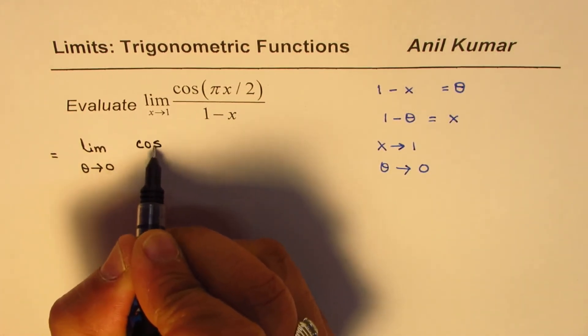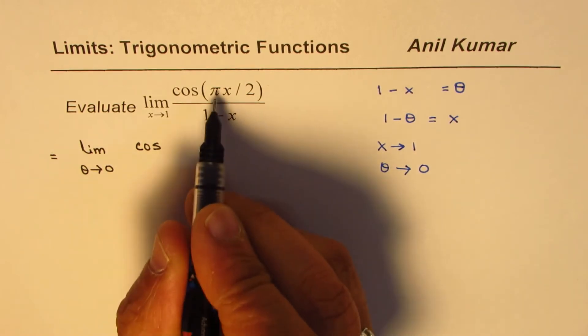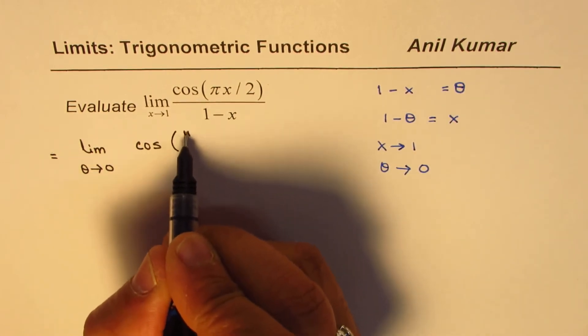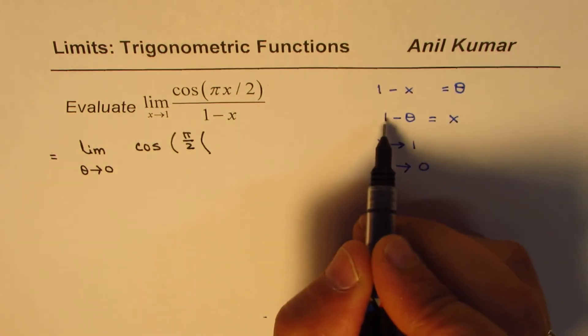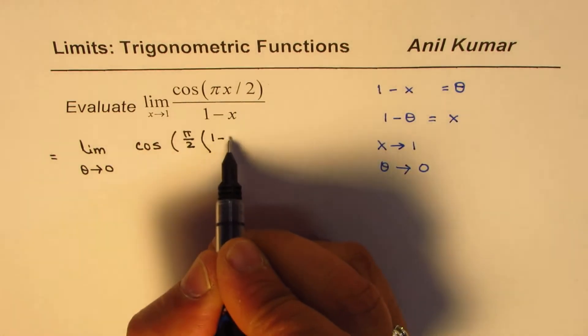Cos of π, so it's written π/2. Remember, this is π/2. And I will replace x by 1 minus θ: 1 minus θ.